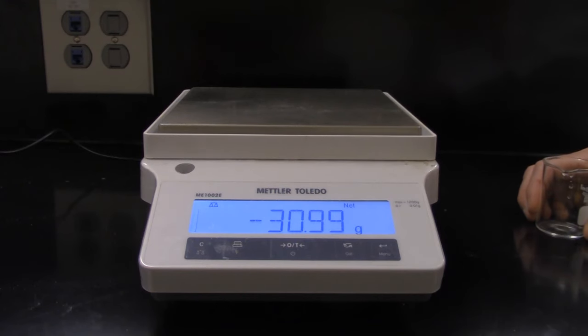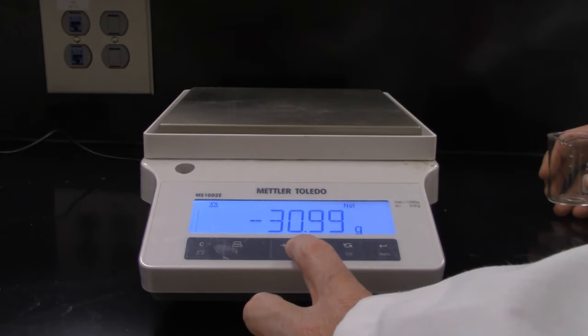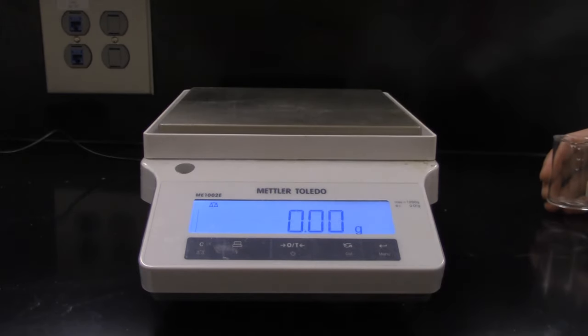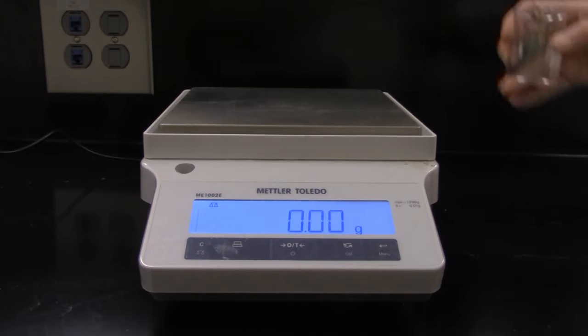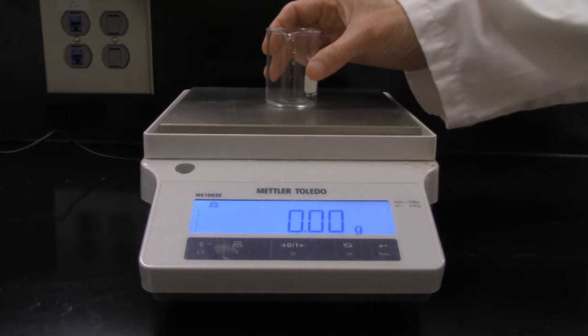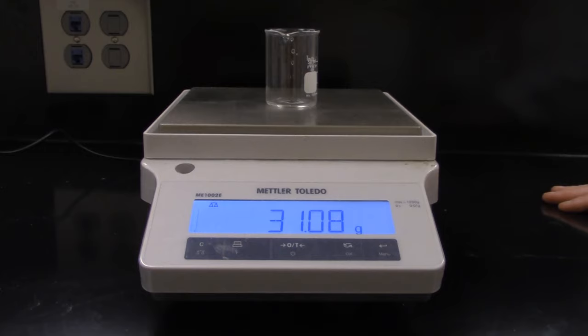We have electronic balances in the lab to measure mass. You push the zero button to get a reading of zero, and then place the item you want to measure on the balance. And make sure to record all of the places past the decimal in your data.